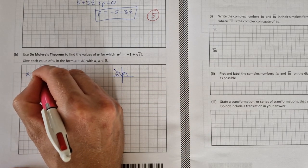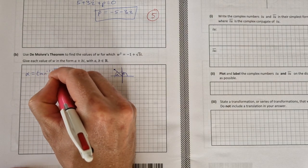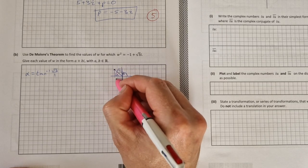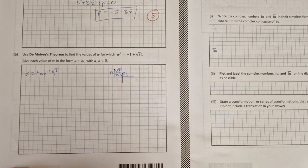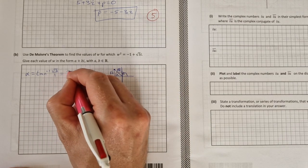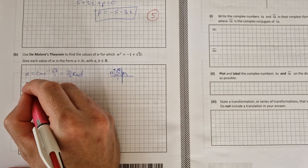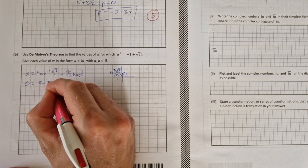So alpha equals the tan inverse of root 3 over 1. That's from this triangle here, root 3 and 1. That's equal to pi over 3 radians. Therefore theta is equal to pi minus pi over 3, which is 2 pi over 3 radians. So that's theta.